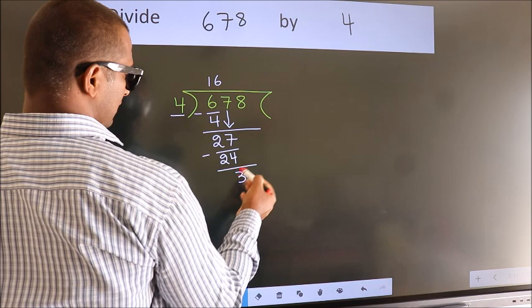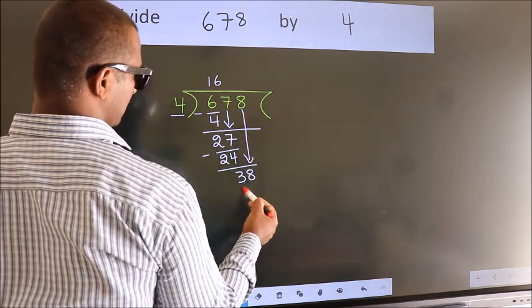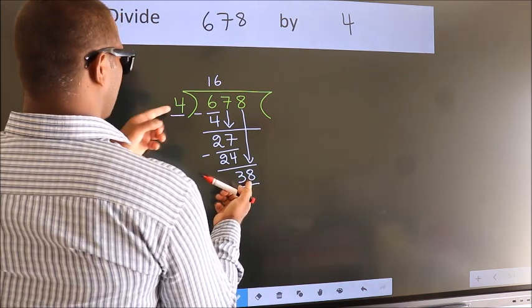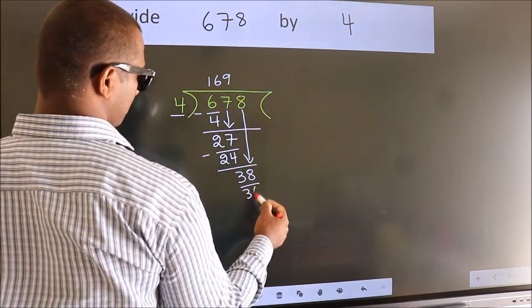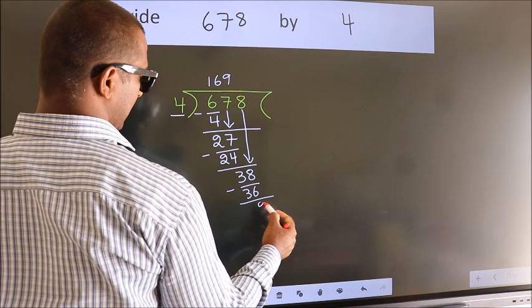After this, bring down the beside number. So 8 down. So 38. A number close to 38 in the 4 table is 4 times 9, 36. Now we subtract. We get 2.